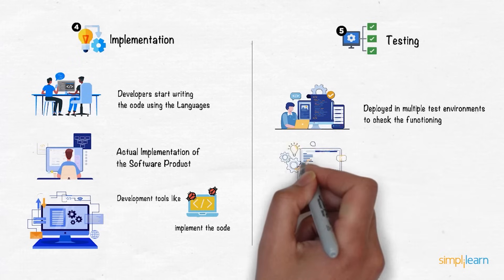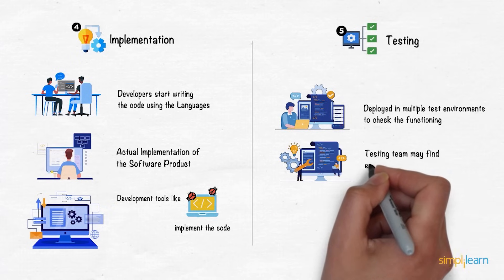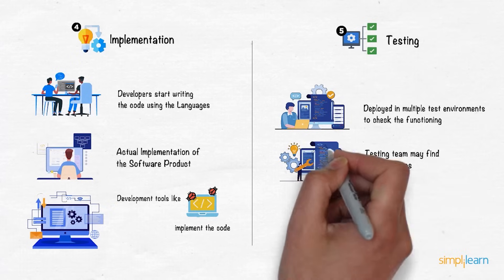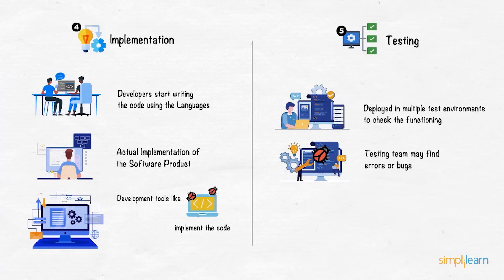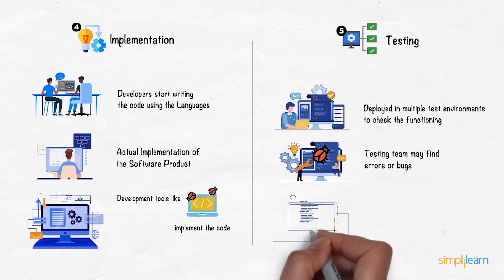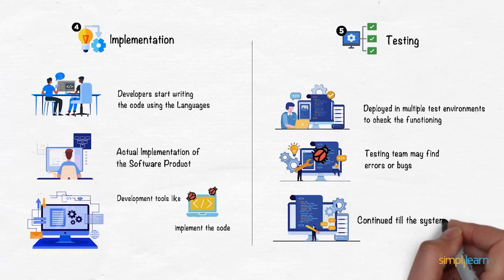After the test cases are completed, the quality assurance and testing team may find errors or bugs in the software, which will be forwarded to the developer team for debugging. This testing and debugging process continues until the software is stable and works per the required specifications.